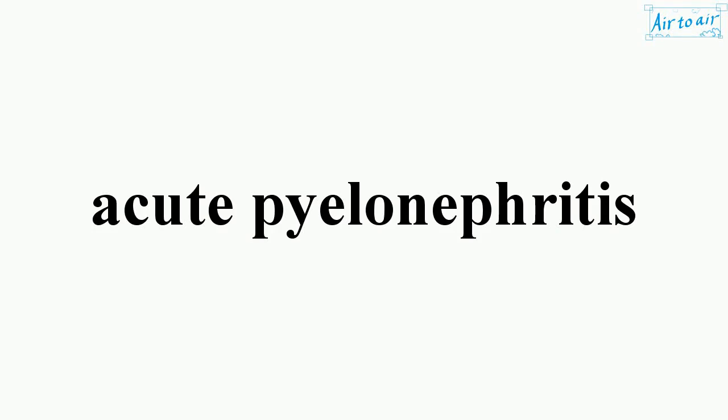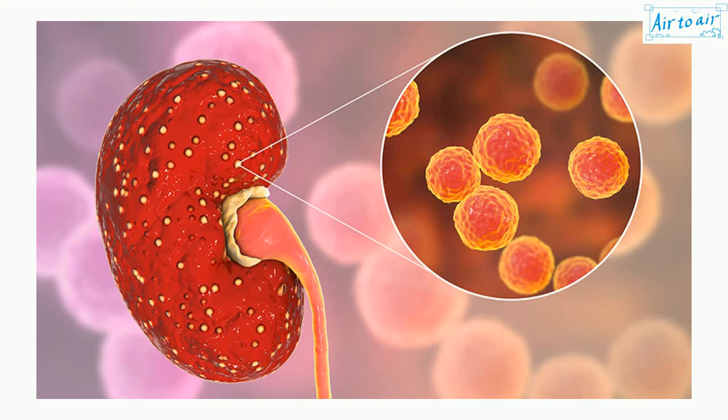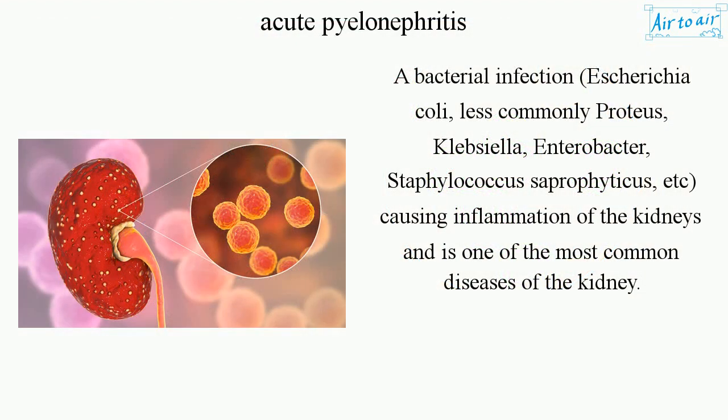Acute pyelonephritis is a bacterial infection — most commonly Escherichia coli, and less commonly Proteus, Klebsiella, Enterobacter, and Staphylococcus saprophyticus — causing inflammation of the kidneys. It is one of the most common diseases of the kidney.